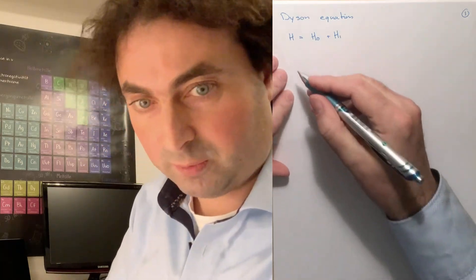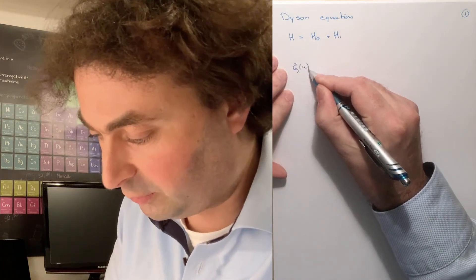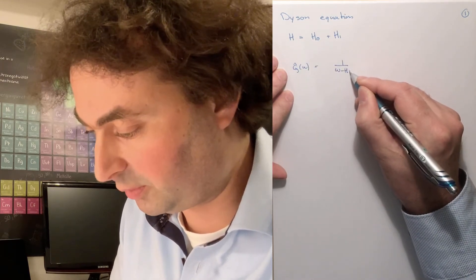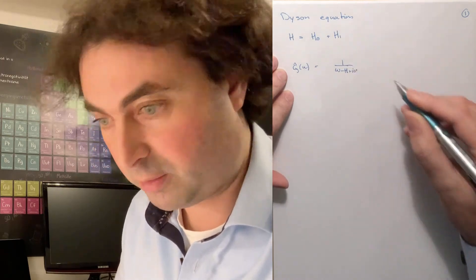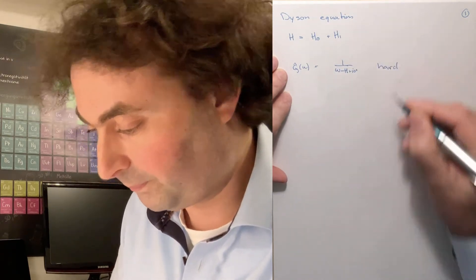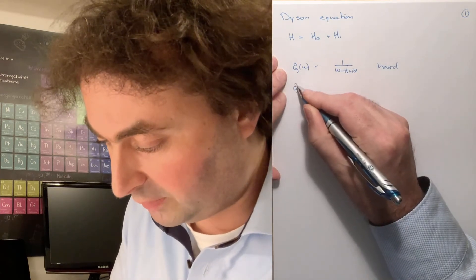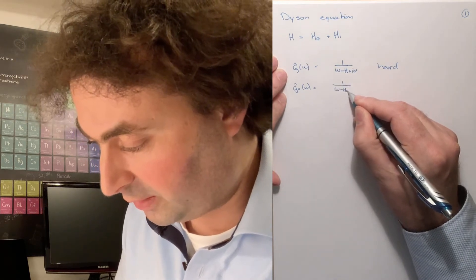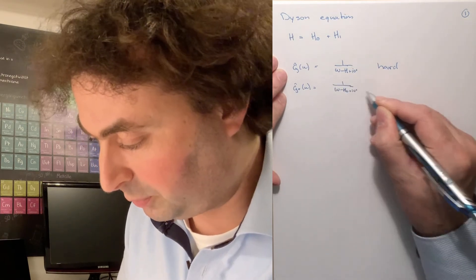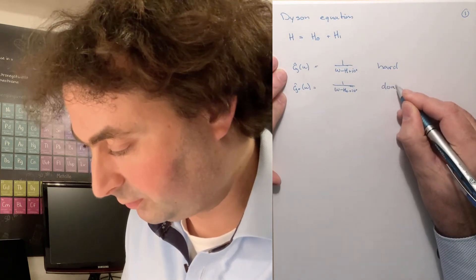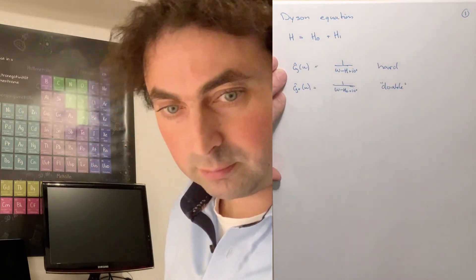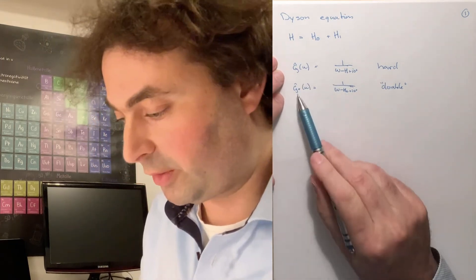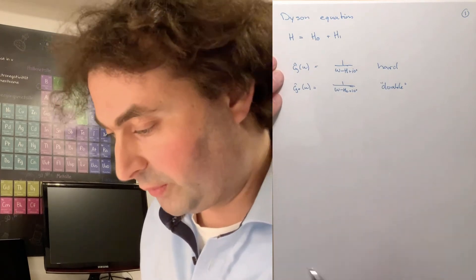So we look at systems where calculating the Green's operator for our full system — which is 1 over omega minus the Hamiltonian plus a small imaginary part — is hard, but calculating the Green's operator for H0, which is 1 over omega minus H0 plus a small imaginary part, is doable. Let's see how we can calculate the full Green's function when we know the bare Green's function G0.